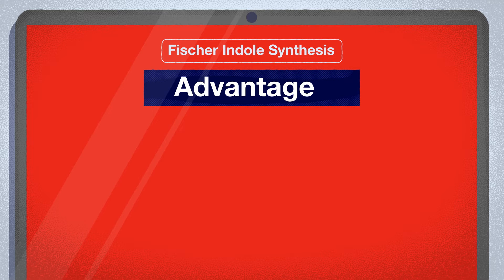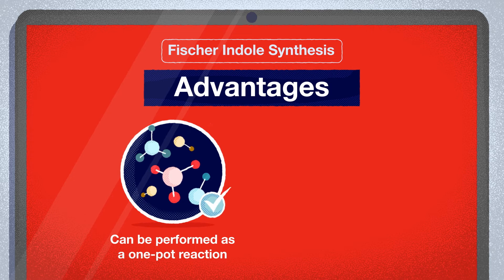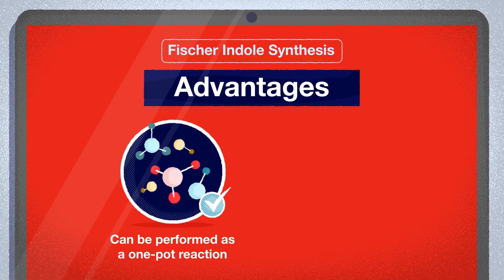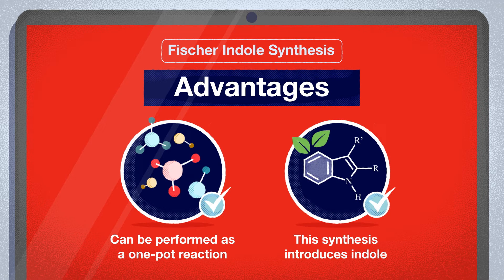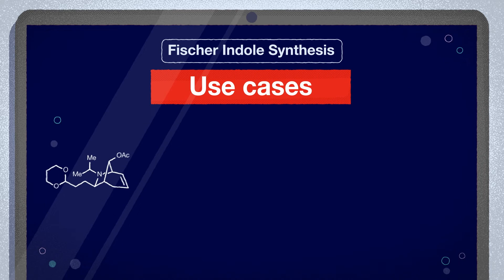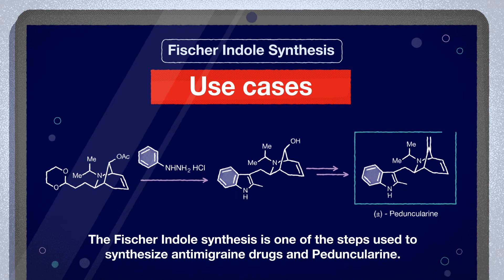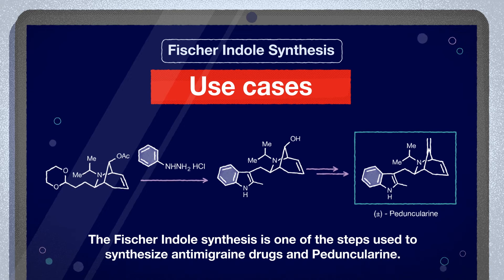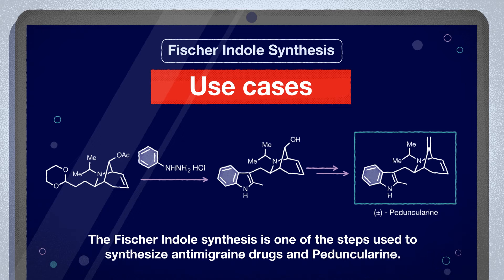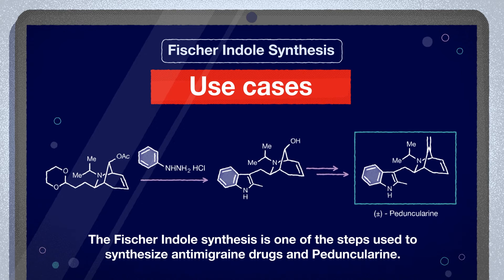The Fischer-Indole Synthesis is advantageous in that it can be performed as a one-pot reaction, since it is not necessary to isolate the arylhydrazone. Furthermore, this synthesis is very important to introduce indole, which is an element found in several biologically active natural products. The Fischer-Indole Synthesis is one of the steps used to synthesize anti-migraine treatment drugs and pedanculerine, an alkaloid that has shown cytotoxicity activity towards breast cancer cell lines.